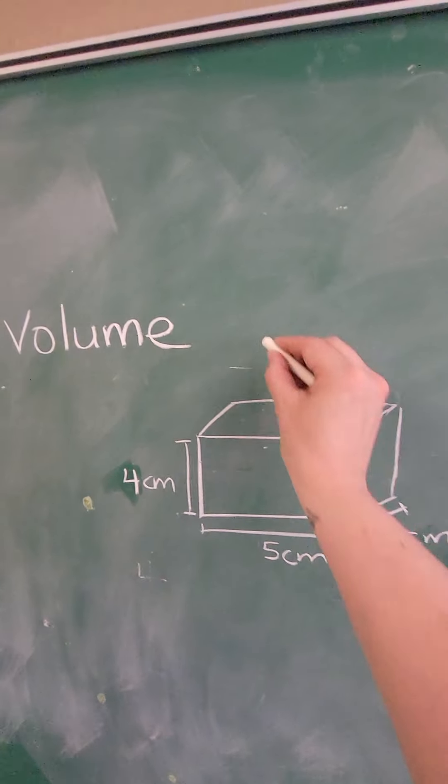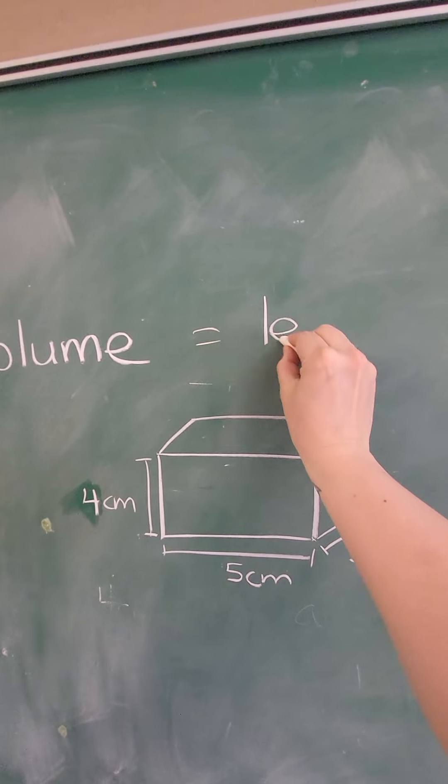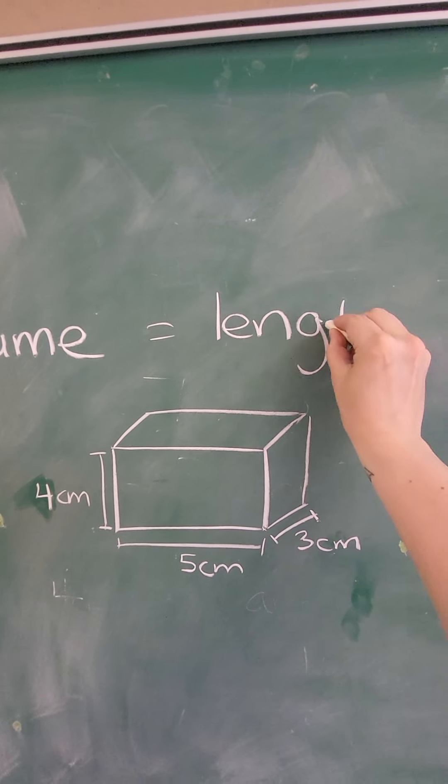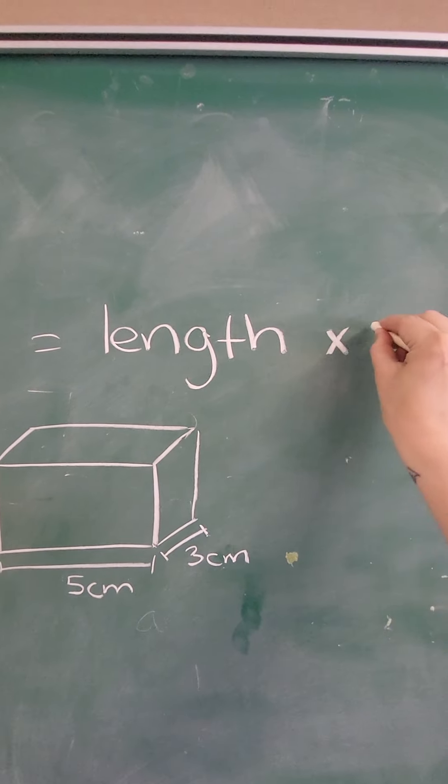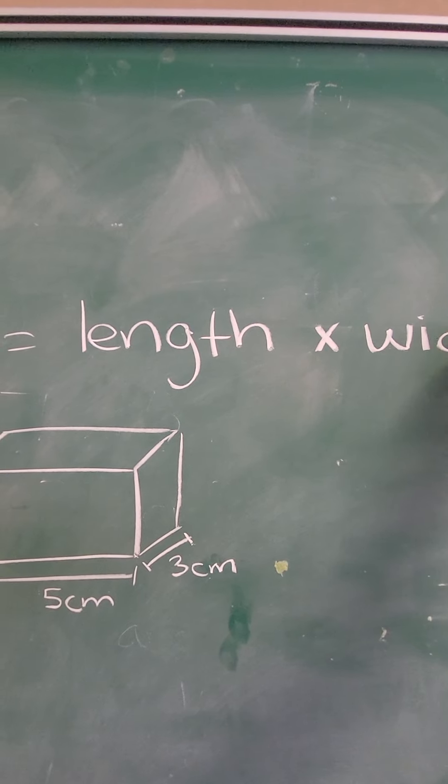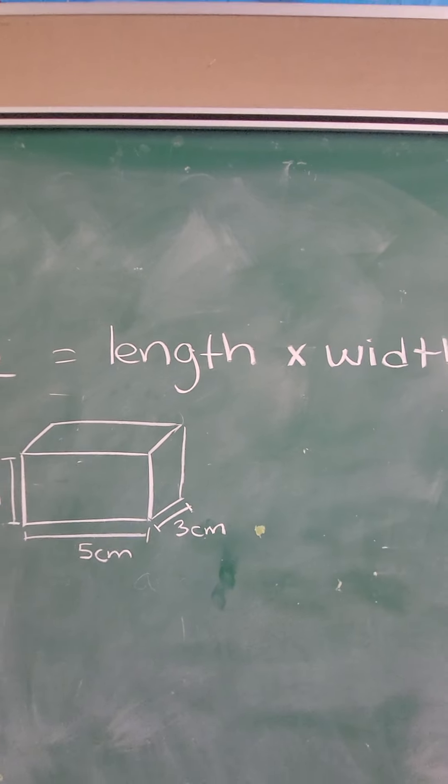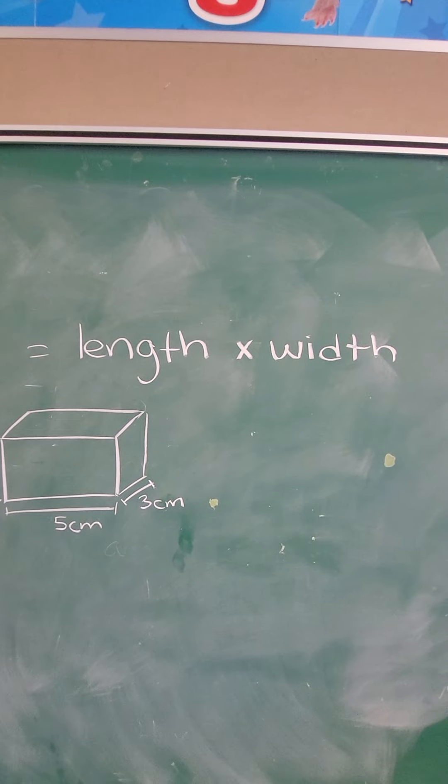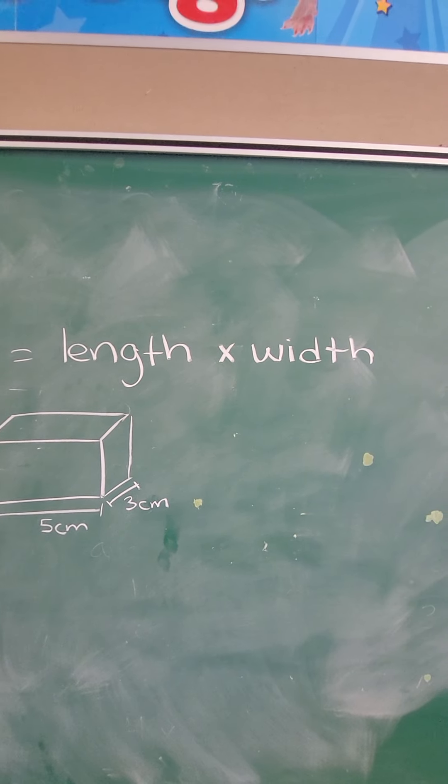And the formula for volume is length times width. You might say to yourself, hey, that looks kind of familiar, and it does, because length times width is how you find the area of a 2D shape.